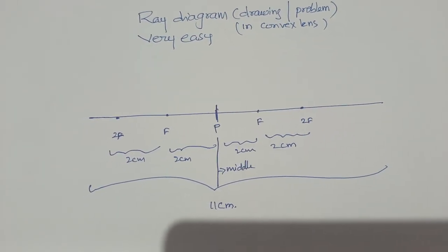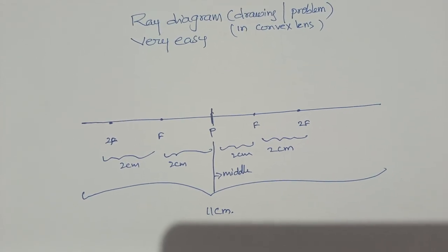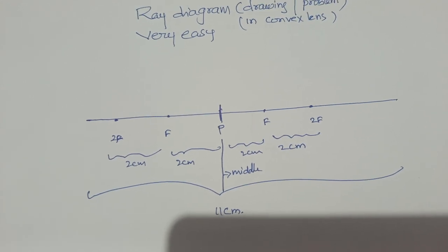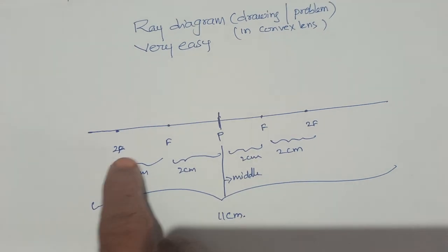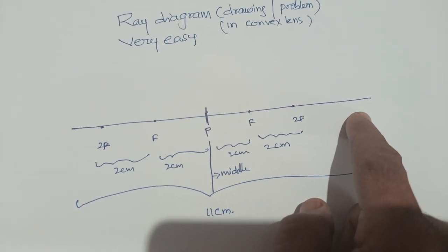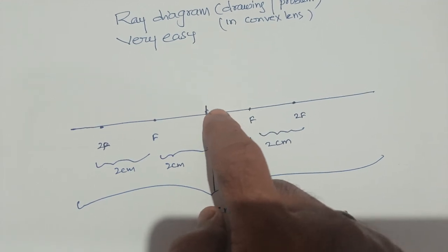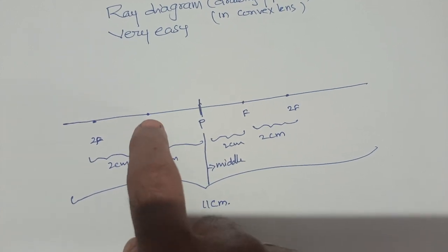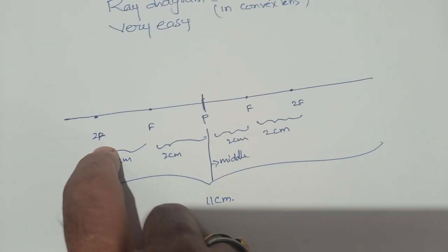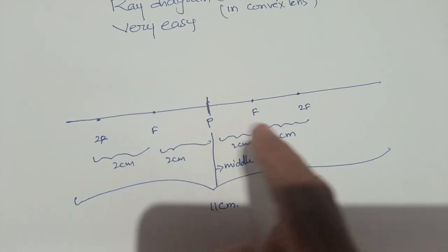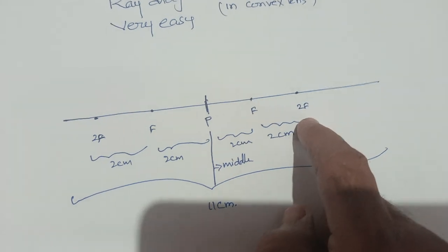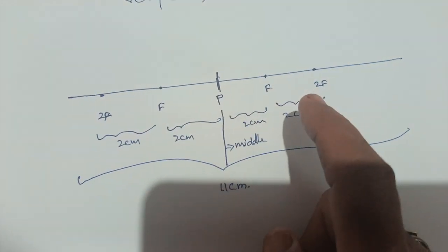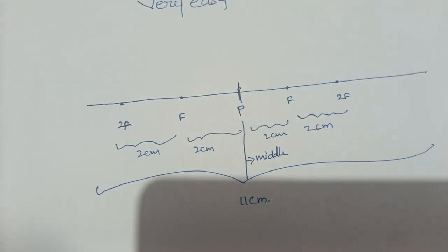Hi children, I would like to show how to draw ray diagrams very easily and solve problems in an easy manner. First of all, take 11 centimeters length of a line and find the midpoint at 6.5 centimeters. Then take 2 centimeters and put a dot for f, again 2 centimeters and put a dot for 2f, on both sides: f and 2f, f and 2f. Don't worry about which is f1, f2, 2f1, or 2f2.